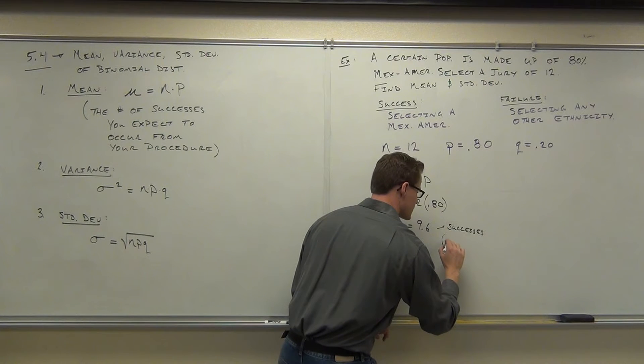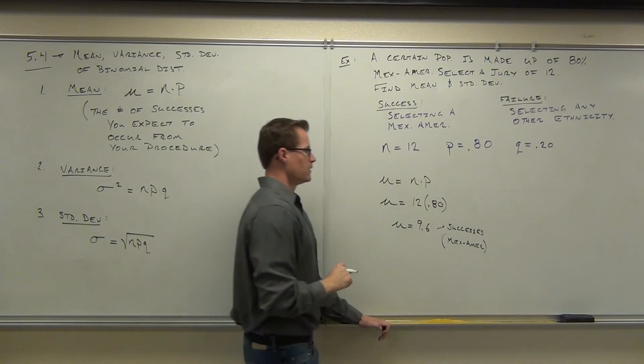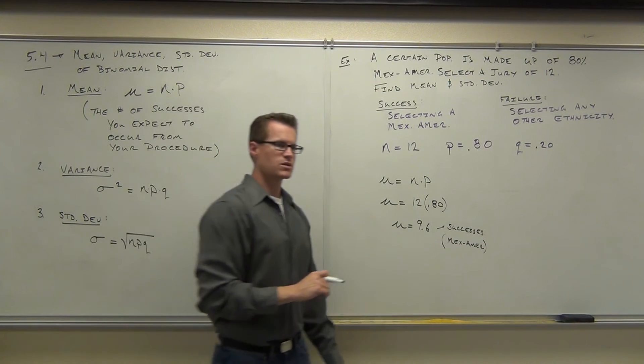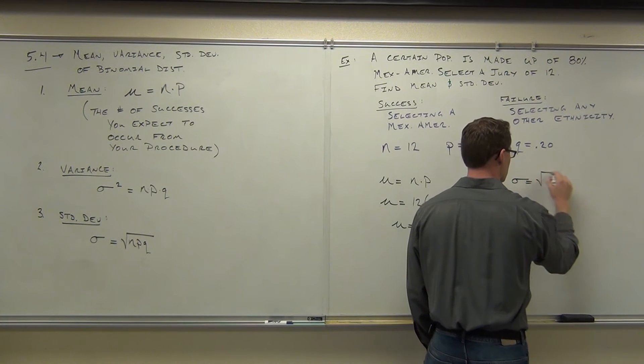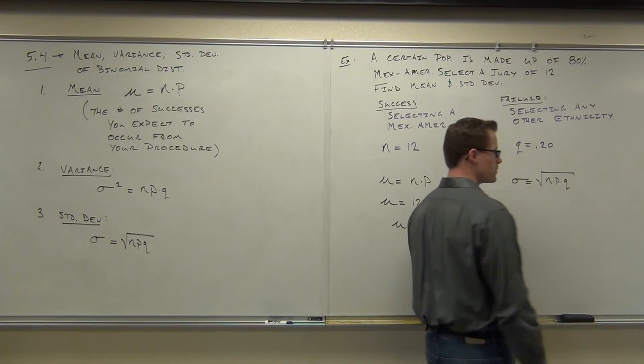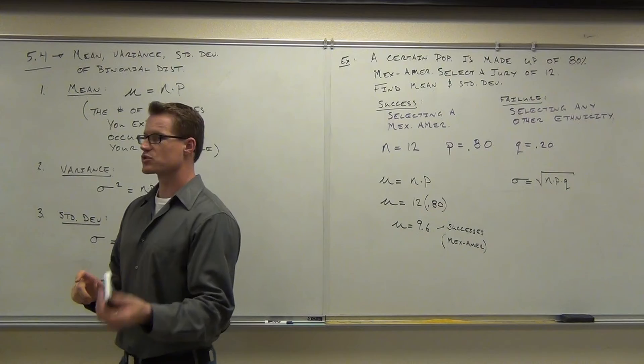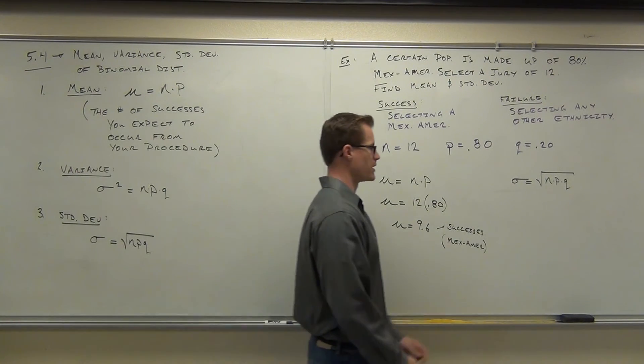In this case, it's selecting Mexican-Americans. Can you please go ahead and do this for me? Calculate your standard deviation. Why don't you do that on your own? Take your n times p times q, then take a square root of it, and tell what you get after that.